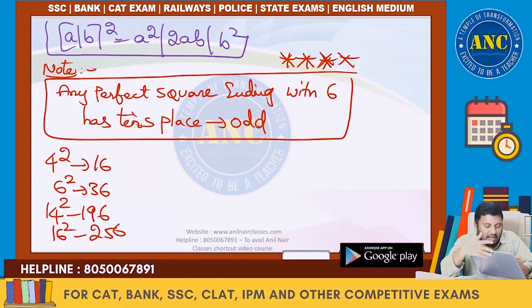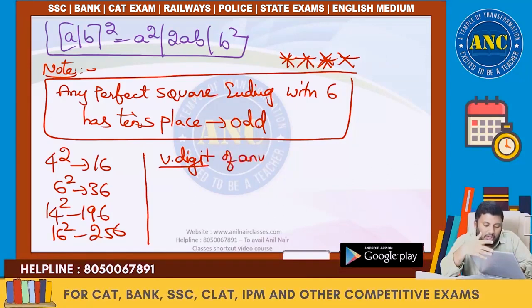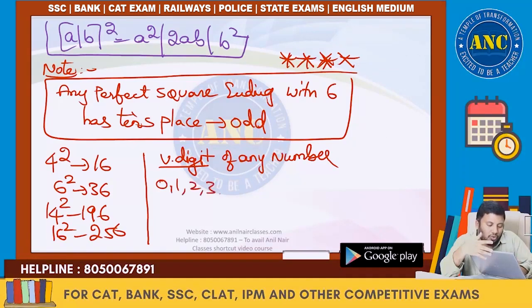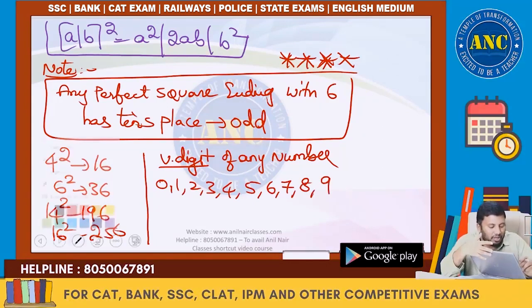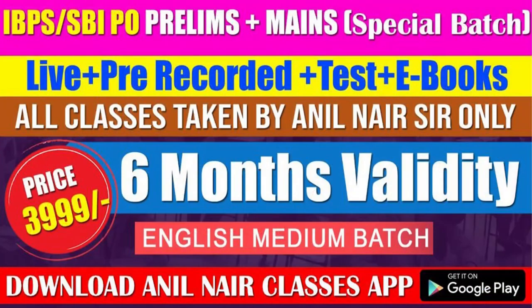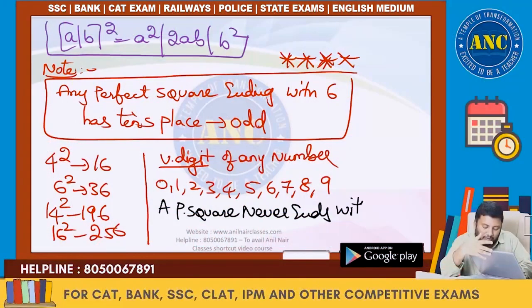I hope that is clear. The unit digit of any number will be from 0 to 9. Another important point: a perfect square never ends with 2, 3, 7, or 8.